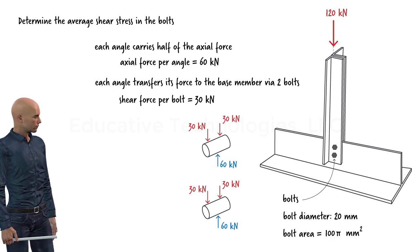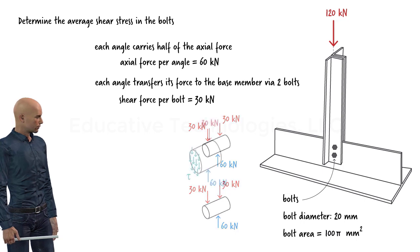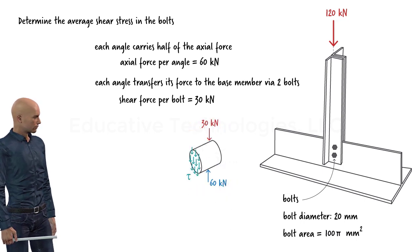The forces acting on each bolt cause tau to develop on the surface of a typical cross-sectional area of the bolt. Knowing the area of the bolt and the shear force that is causing the stress, we can easily compute the average shear stress in each bolt.